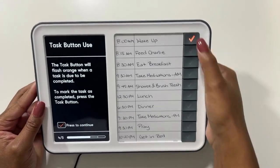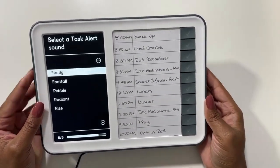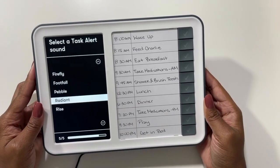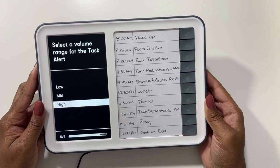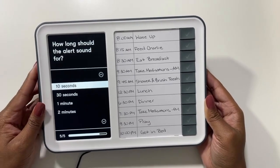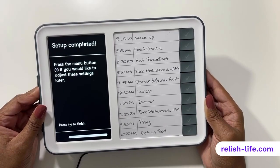Once finished, the device will guide us on how the task alerts work. We'll choose a sound we like, the volume we want it to be, and how long the alert should play. We'll click through the remaining prompts and we are all done.